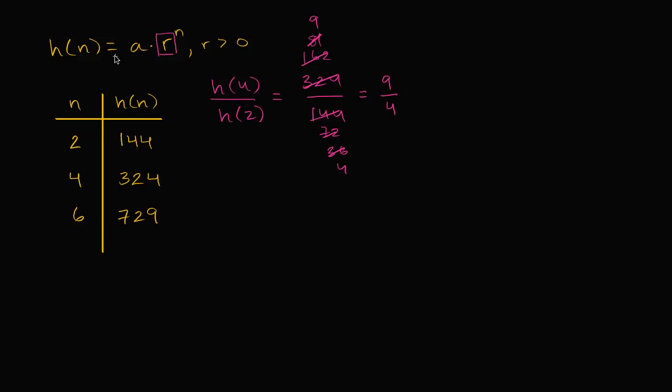But we could also rewrite this ratio using this form of an exponential function. So we could also say that this is going to be equal to h of 4, which is a times r to the fourth power, and h of 2 is going to be a times r to the second power. And this simplifies nicely. a divided by a cancels, and then r to the fourth divided by r squared, that's going to be r to the four minus two power, or r squared.